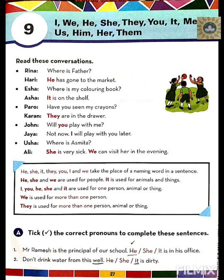'We' is used for more than one person. For example, if Rohan, Shara, and I are going to the market, or Mohan and I are going to the market, we say 'we are going to the market.' So 'we' is used for more than one person, animal, or thing.